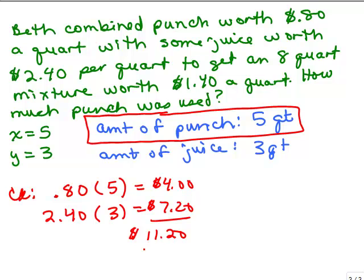Now, we want to check that against the price of the mixture. Is that the same as the mixture price? The mixture price, I've got a whole 8 quarts at $1.40 a quart. So, we do 8 times $1.40 and we also get 11.20, so it does check. So, our answer is that for the amount of punch, we're going to use 5 quarts of punch.